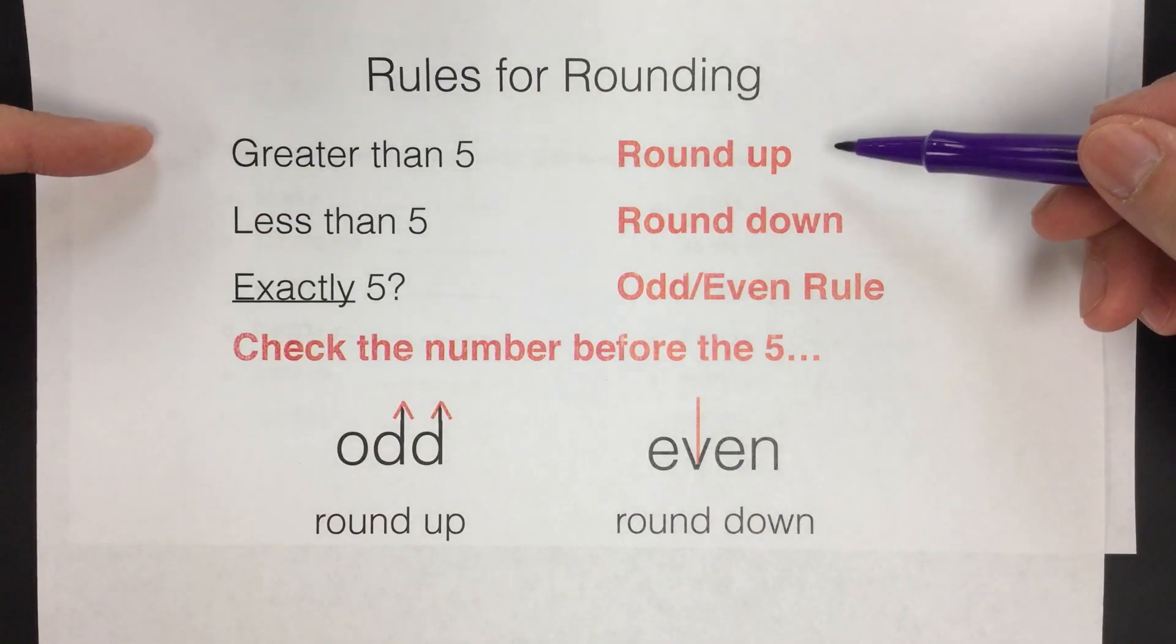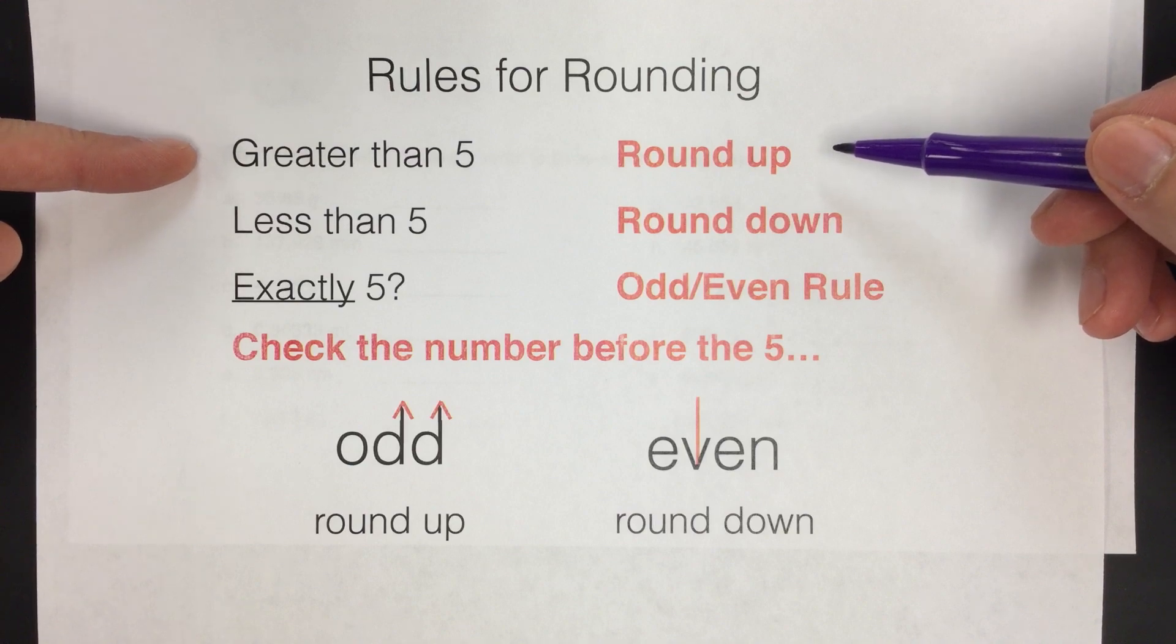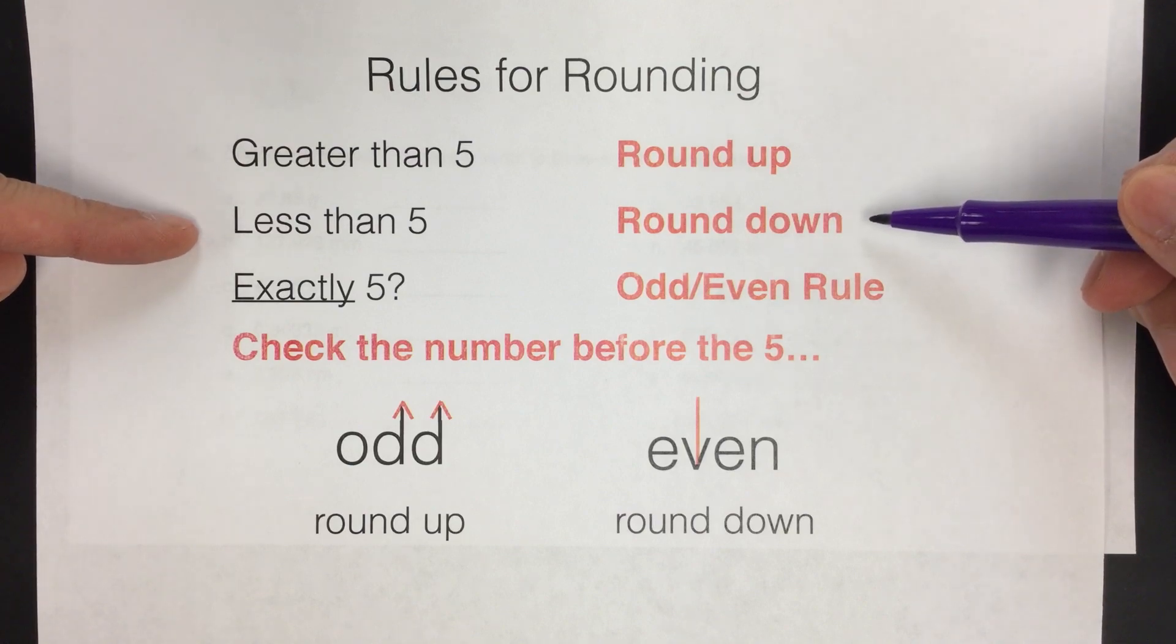So the first two ideas are the same. If it's greater than five, you want to round up. If it's less than five, you want to round down.